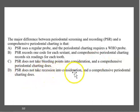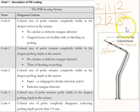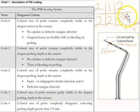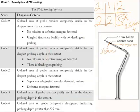PSR also takes recession into consideration. Sometimes we can put an asterisk next to a number — that asterisk can indicate furcation, recession of 3.5 millimeters or more, or mobility. So PSR does look at recession, not as thoroughly as a comprehensive periodontal assessment, but an asterisk is given when recession is 3.5mm or more, as well as for other findings like furcation and mobility. The video will be linked in the description.